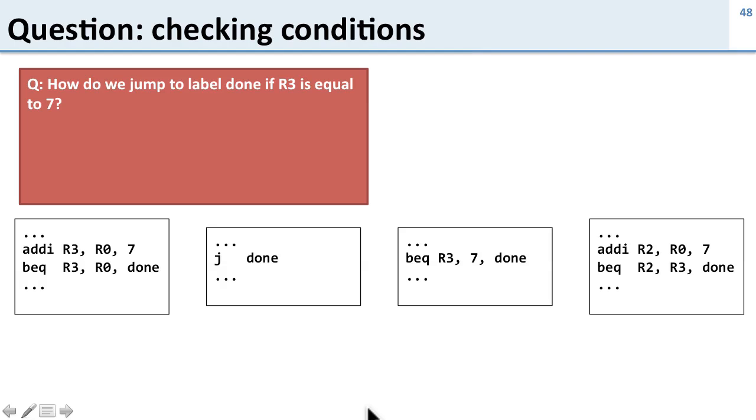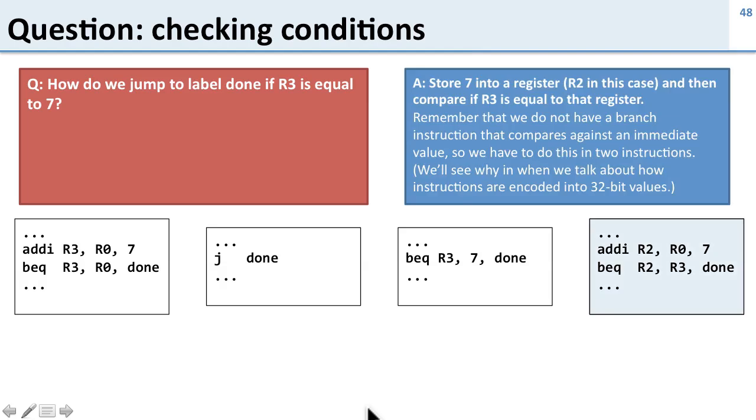Question: How do we jump to label done if R3 is equal to 7? Here's the answer. We need to take 7 and put it into another register, in this case R2 using an add immediate, then compare the registers we want. Register R3 and R2, because R2 now has 7 in it. Now we can compare if R3 equals 7 and branch to done.